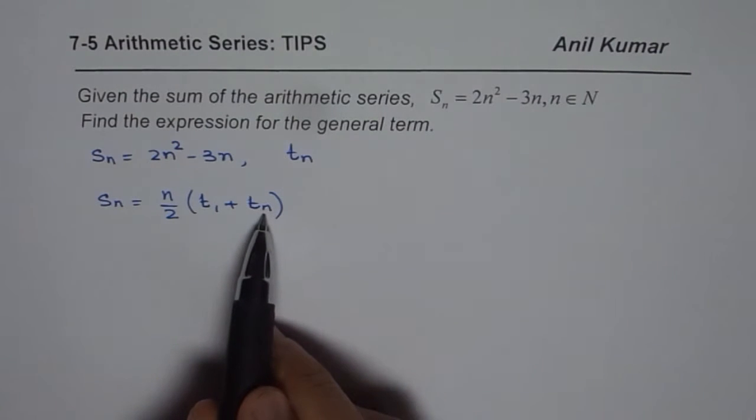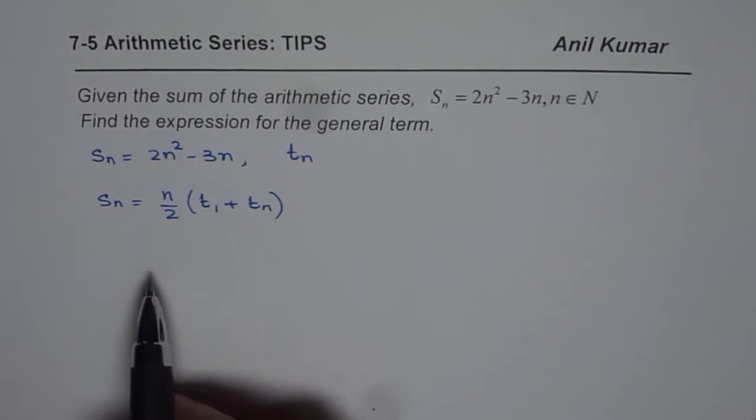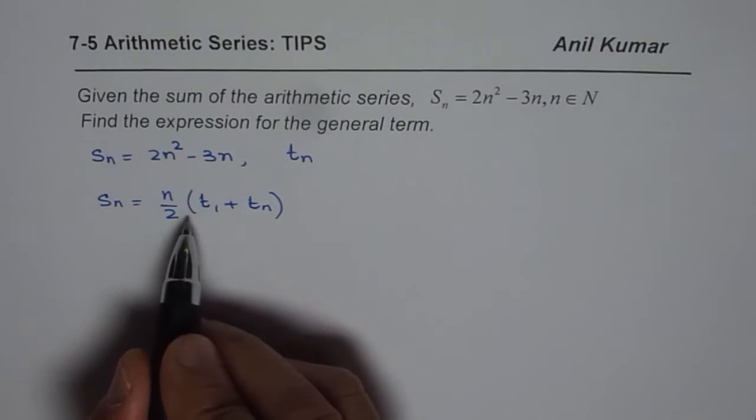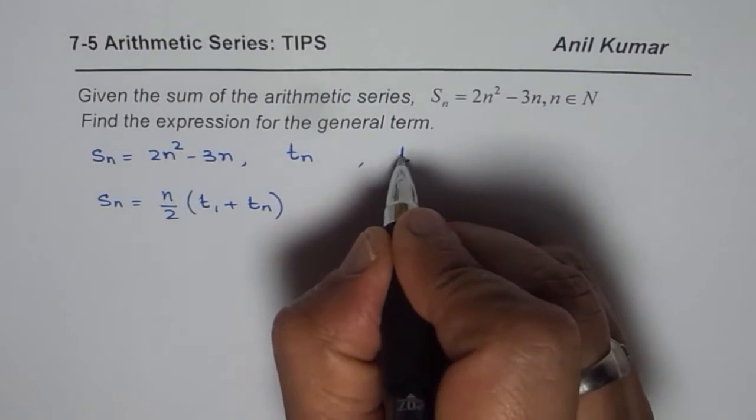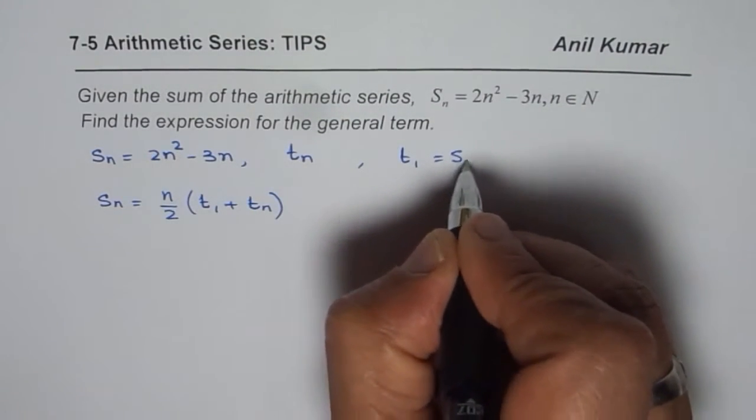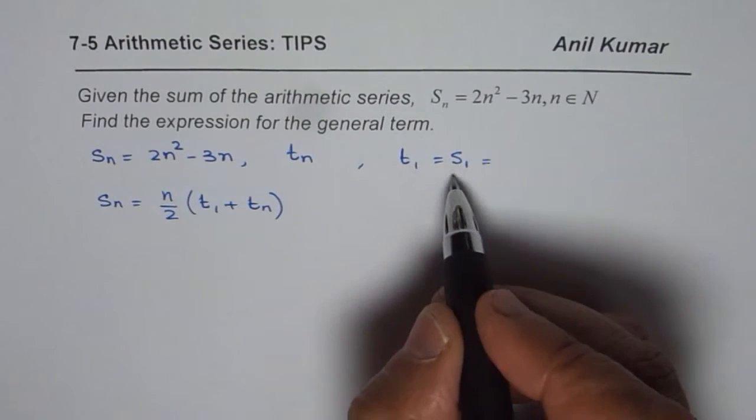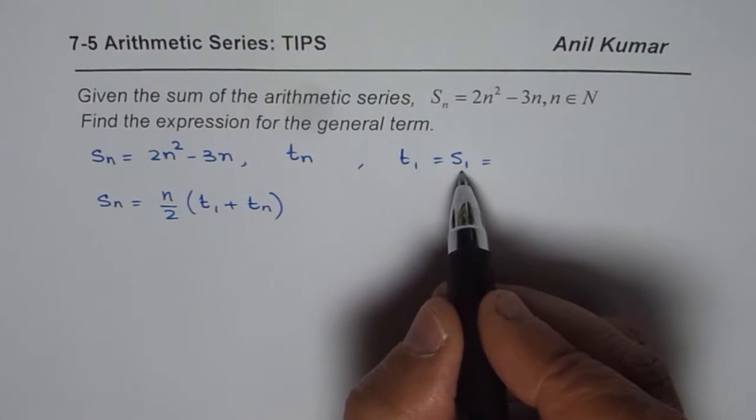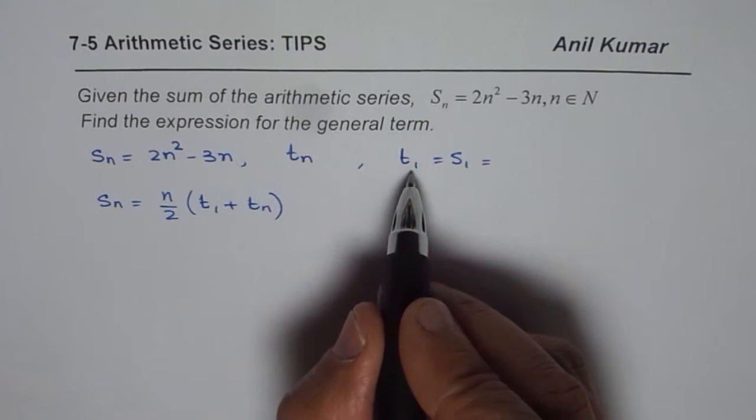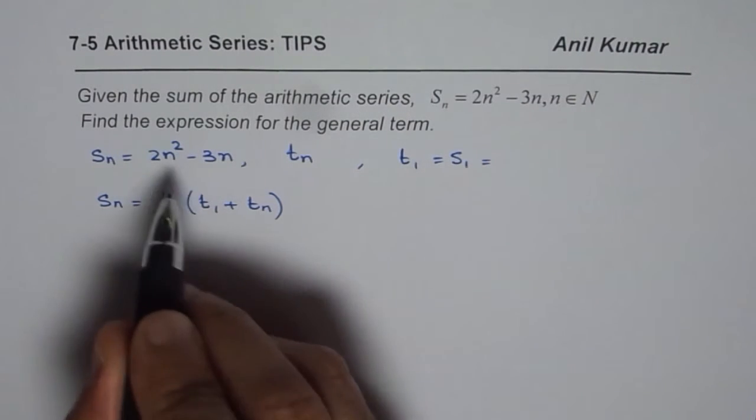From here we can find t_n, but what is t_1? Well, t_1 is indeed equal to S_1. If there is only one term, the first term, then the sum of the first term will be the number itself.